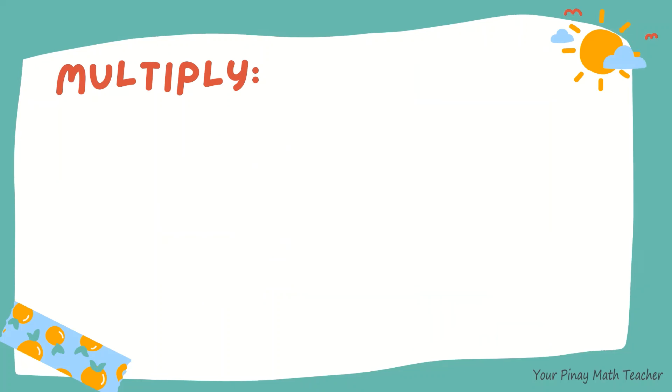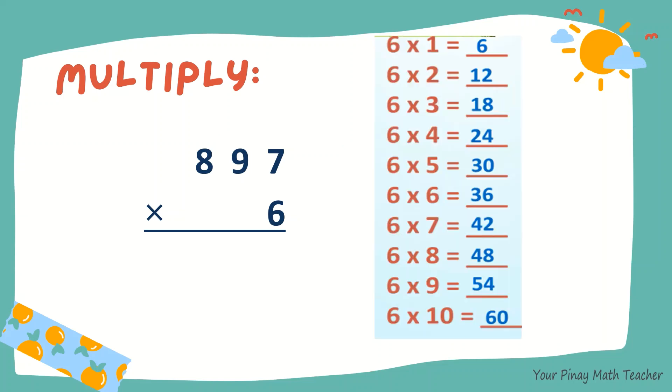At this time, let's multiply 897 by 6. 6 times 7 is 42. So 2, carry 4. 6 times 9 is 54. Plus 4, 58.